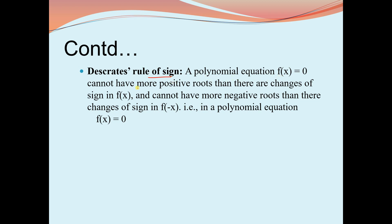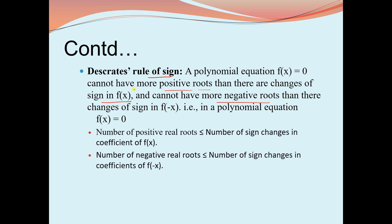Descartes' rule of signs: a polynomial equation f(x) = 0 cannot have more positive roots than there are sign changes in f(x), and cannot have more negative roots than there are sign changes in f(-x). The number of positive real roots ≤ sign changes in coefficients of f(x), and the number of negative real roots ≤ sign changes in coefficients of f(-x).